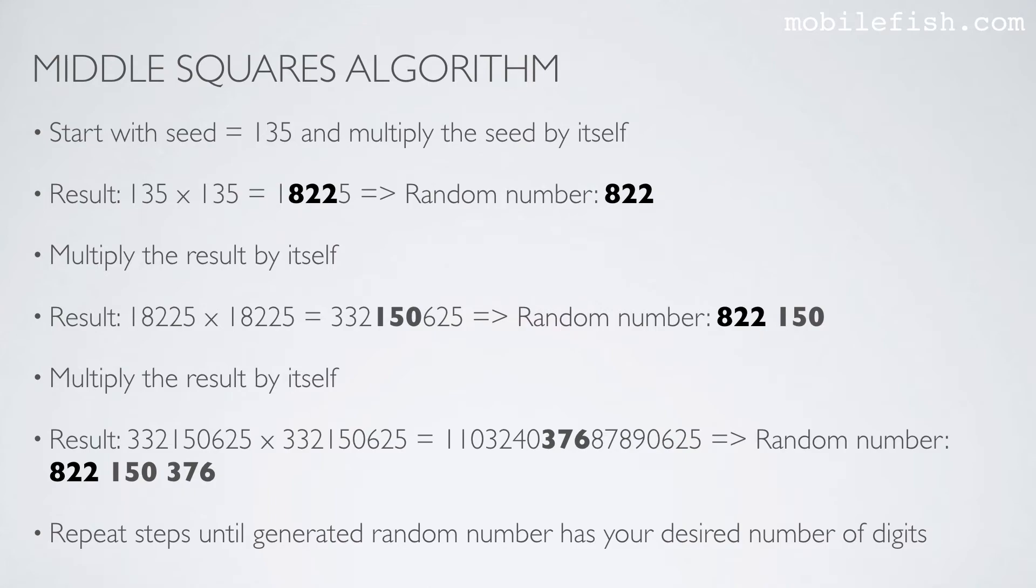Please note this is just a demonstration how to generate a large random number using a small seed value. The middle squares algorithm is a simple algorithm and is not used in the blockchain world. Other much more complex pseudo-random number generator algorithms are being used and the seed is much larger.